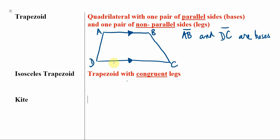And then AD, these two lengths over here, and BC, are legs. All right, so two parallel sides, two non-parallel sides.